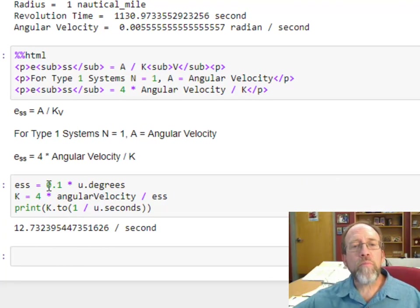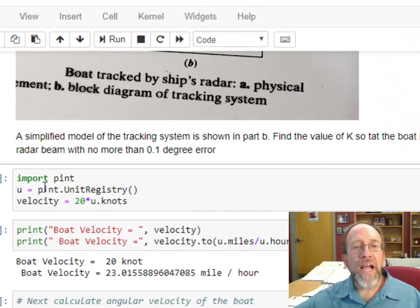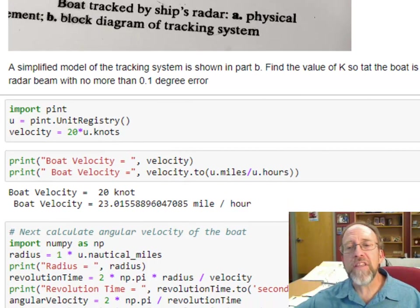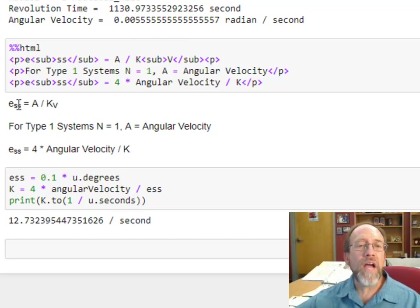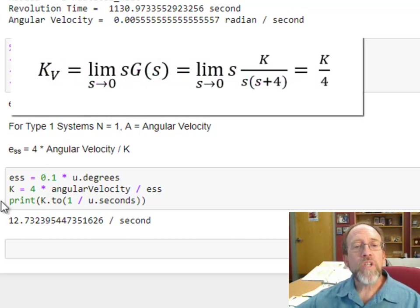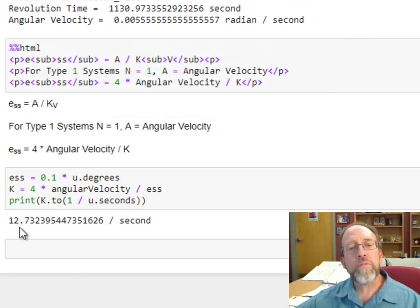The ESS is equal to 0.1 degrees. Remember I said in the problem statement that the error was 0.1 degrees. That's 0.1 times u degrees. Remember u was set up in pint as a unit registry, which means that I've got the ability to assign units to any of the numbers that I'm creating. k is equal to four times the angular velocity over this error, which I've actually calculated from the equation that I derived. I can then calculate k, and I want to print the k out. k's units are inverse seconds, 12.7 inverse seconds.